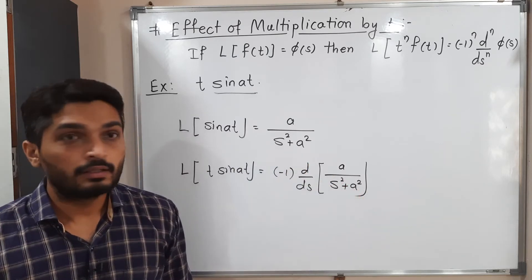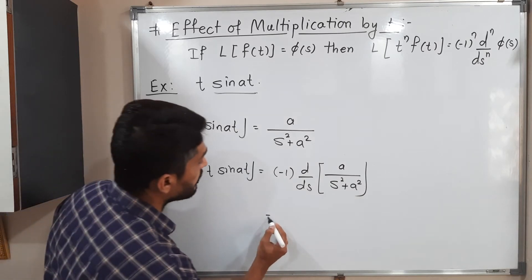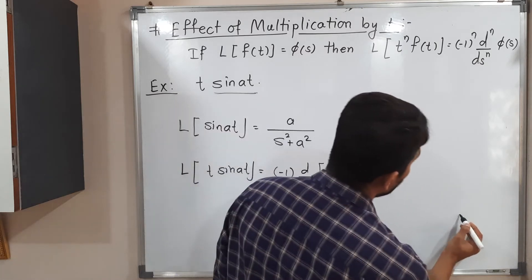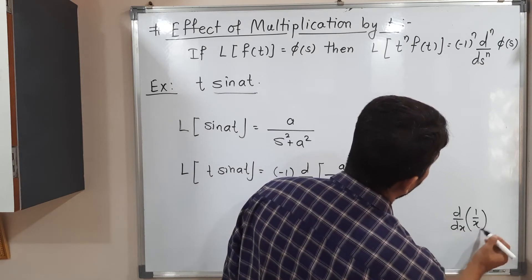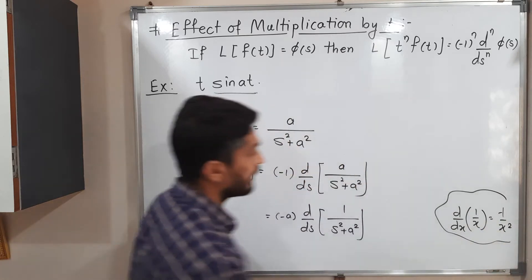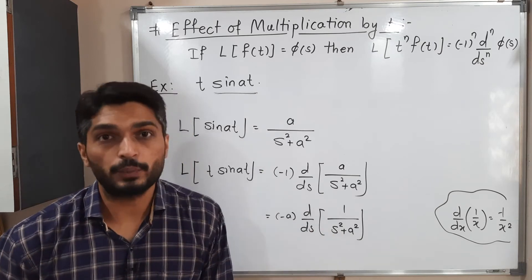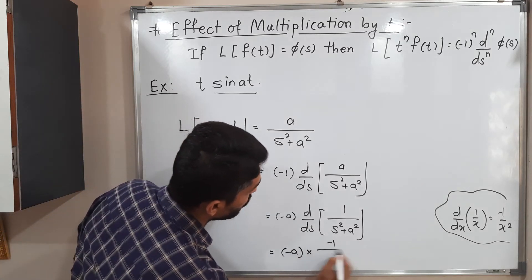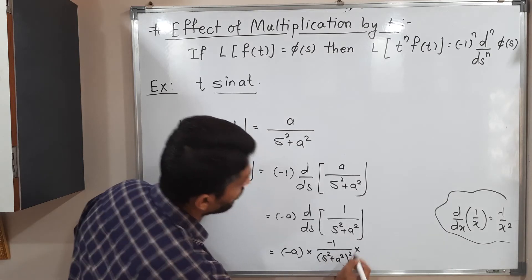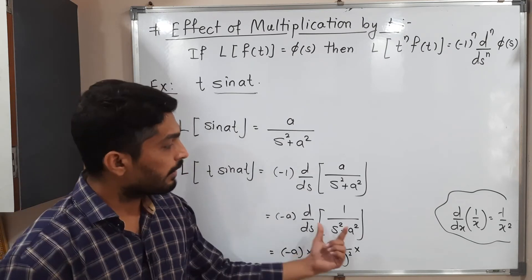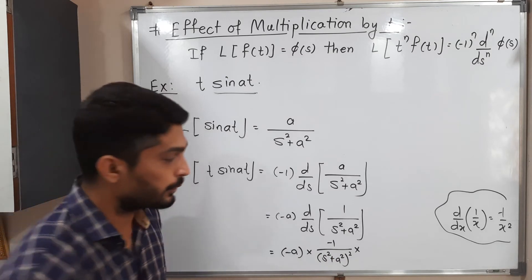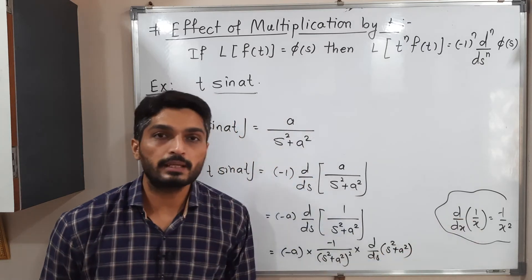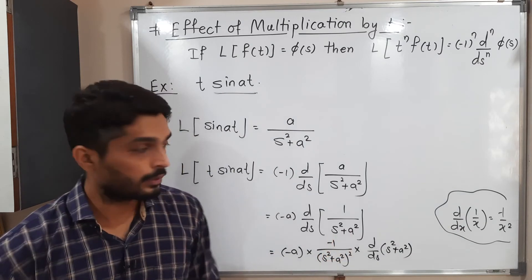So we put that in and find its derivative. The constant a comes outside, giving minus a times the derivative of 1/(s² + a²). Using the formula d/dx[1/x] = -1/x², where at the place of x we have (s² + a²), we can write: minus a times minus 1/(s² + a²)² times the derivative of the denominator by chain rule. So we need the derivative of (s² + a²).